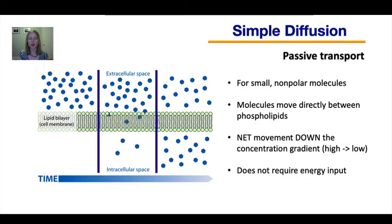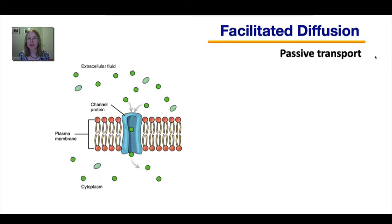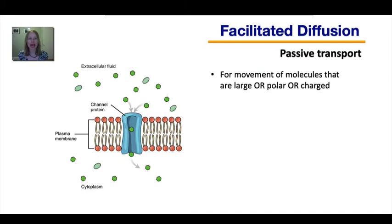How do other types of molecules — ones that aren't small and non-polar — get into or out of cells? We will now discuss facilitated diffusion, which is also a type of passive transport. This type is for movement of molecules that are either large, polar, or charged ions.